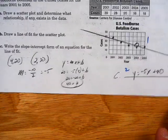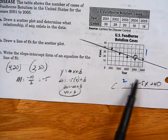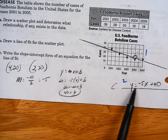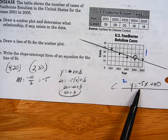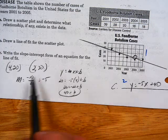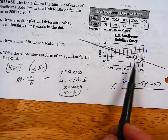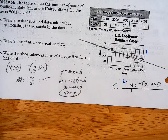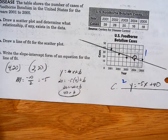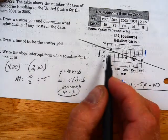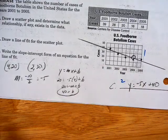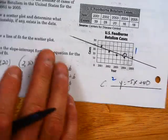So on this one, a lot of yours were more steep, so yours were more like around negative 8. I just checked to see your 2 points and whether you found your slope correctly. And you should be able to tell that your y-intercept is in the ballpark as well.